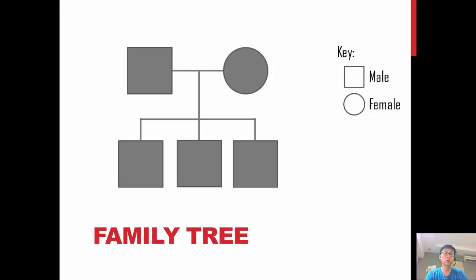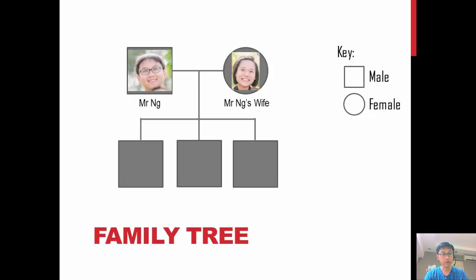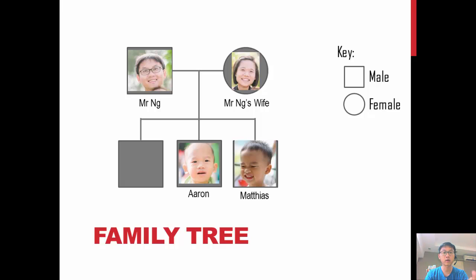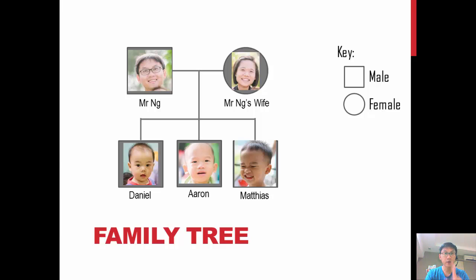I'm going to give you an example using my own family. This is my family tree — this is me, and that's my wife. Together, we produced three boys: my oldest son Matthias, second one Aaron, and my third one Daniel. For males, we represent using a square, and for females, we represent using a circle.